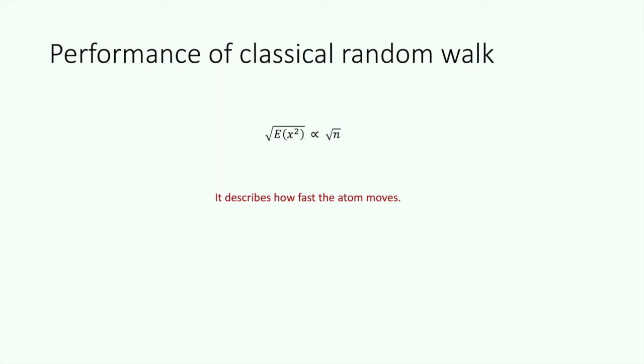Now let's look at the quantum case. In the quantum random walk, we also have two steps. Step one, flip a coin. And step two, moving according to the result of coin tosses. Now let's look at step one.